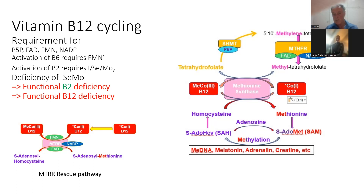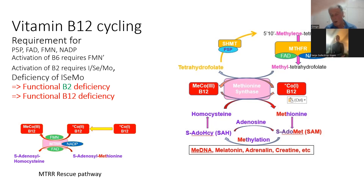A folate backbone starts methylated as 5,10-methylenetetrahydrofolate, and that has to move through an enzyme called methylenetetrahydrofolate reductase. That enzyme requires FAD — the active component of vitamin B2. This is where iodine comes in, because you need iodine to activate B2. Without that, you don't get folate coming through and can't properly cycle B12.